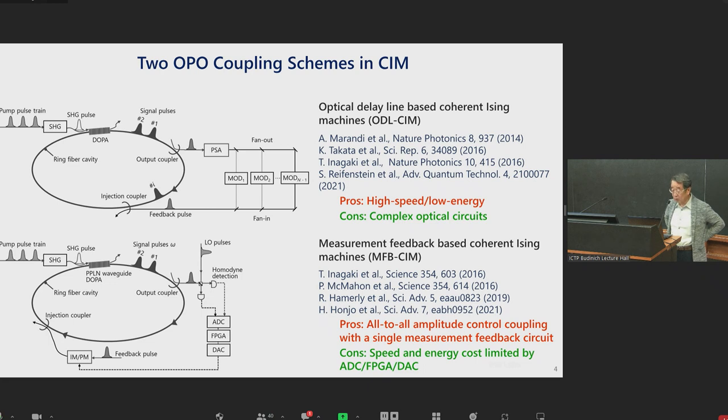The second type is called measurement feedback based coherent Ising machine. In this case, external optical delay line circuit is replaced by optical homodyne detector, analog to digital converter, FPGA, and digital to analog converter again, and then drive the EOM modulator. This second scheme has an advantage of all to all amplitude control coupling can be easily implemented by a single measurement feedback circuit, but of course the speed and energy cost of such an approach is limited by the digital platform.